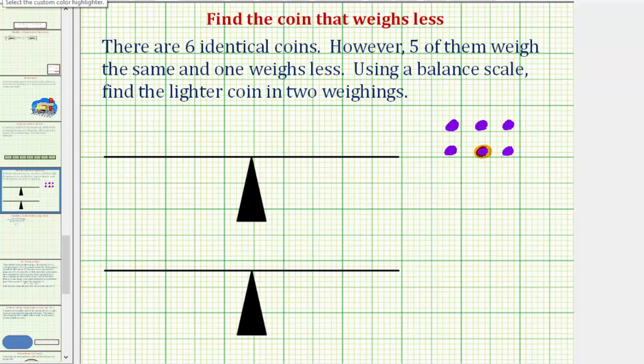So for the first weighing, we'll place three coins on each side of the scale. So we'll have three coins on the left and three coins on the right. Let's just say that the light coin ends up on the right side. That makes this side lighter than the other side and therefore the scale is going to go up in this direction and down in this direction.